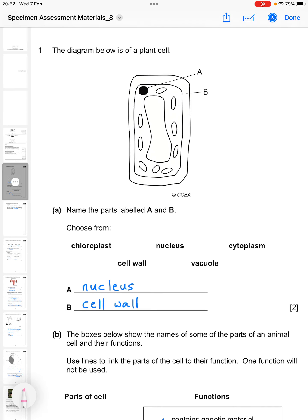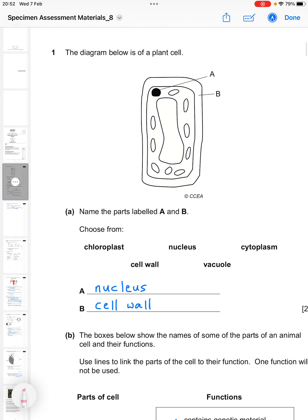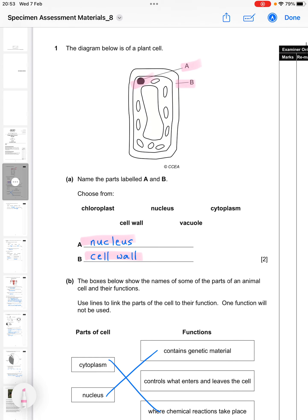So question one, the diagram below is of a plant cell, and we see the plant cell here. Name the parts labeled A, which is here, and B, which you see is around the outside. So of course A is the nucleus, and B is the cell wall. You see because it's the foundation tier paper, you're given a list of words that you can choose from. Two marks for that, so one mark for each.